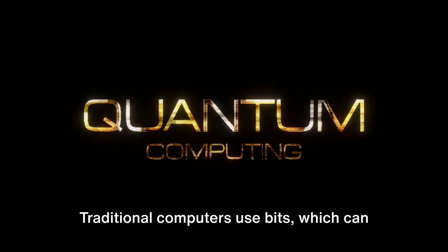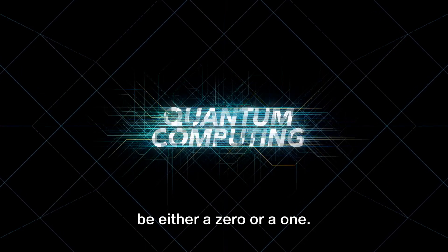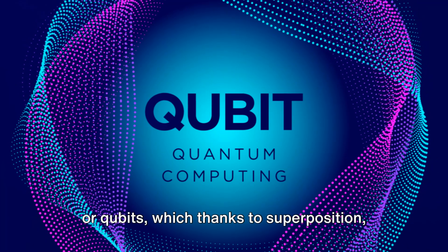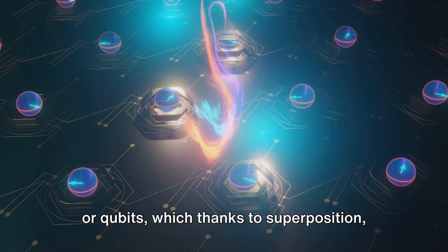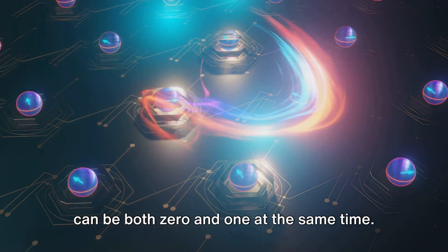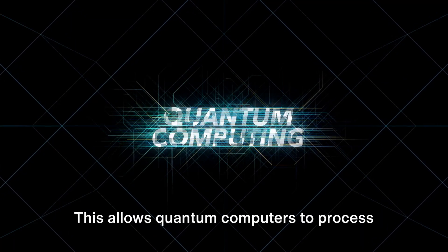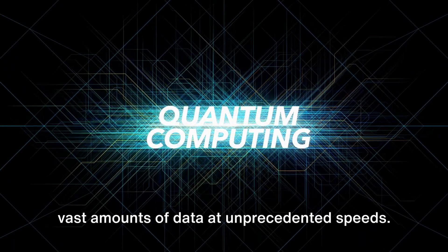Traditional computers use bits, which can be either a zero or a one. But quantum computers use quantum bits or qubits, which, thanks to superposition, can be both zero and one at the same time. This allows quantum computers to process vast amounts of data at unprecedented speeds.